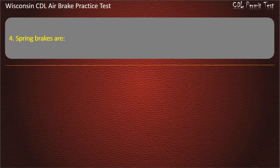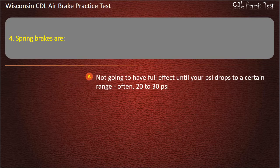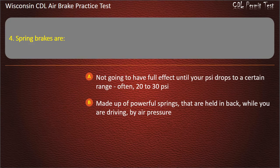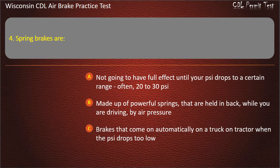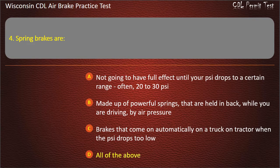Question 4. Spring brakes are: Not going to have full effect until your air pressure drops to a certain range, often 20 to 30 pounds per square inch. Made up of powerful springs that are held back while you are driving by air pressure. Brakes that come on automatically on a truck or tractor when the air pressure drops too low. All of the above. Answer: All of the above.